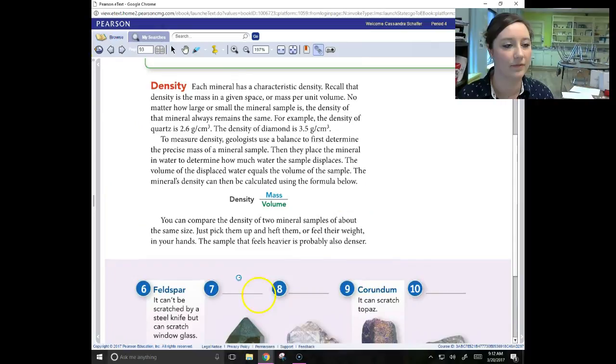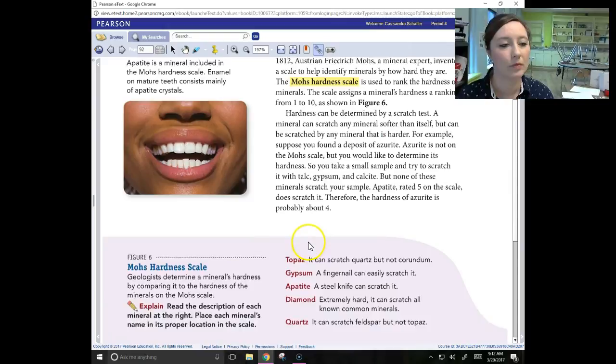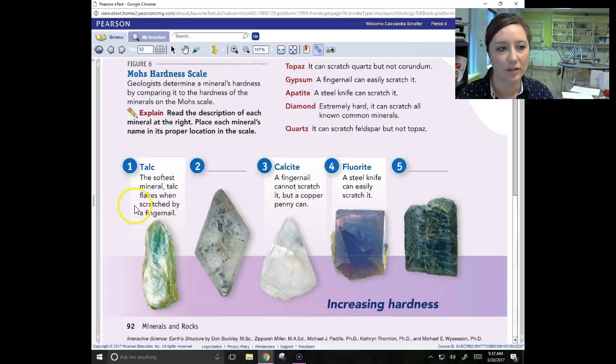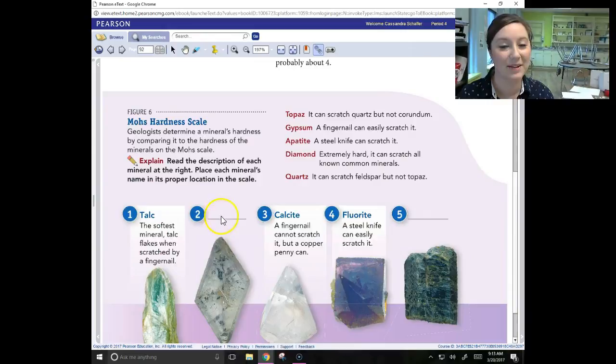Hardness can be determined by a scratch test. A mineral can scratch any mineral softer than itself, but can be scratched by any mineral that is harder. Calcite is harder than talc, so calcite is going to be able to scratch talc. Talc won't be able to scratch calcite because it's softer.